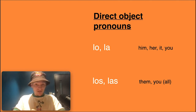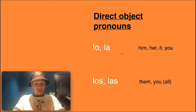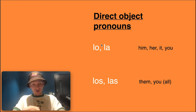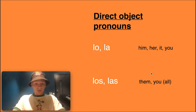The direct object pronouns need to be learned. We have a table here: lo and la, and los and las. Lo means him, la means her, it, or you (usted — the formal version). We're talking about the third person here. Then we also have los and las — masculine and feminine — meaning them or you all in the plural.